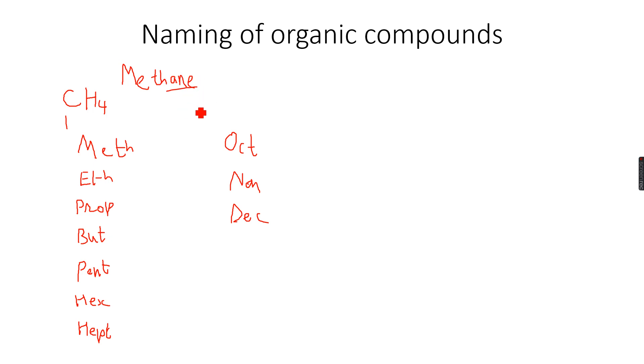How do we come to the second part of the name? The ane comes from the word alkane, because you know that methane is an alkane. That's why the ane comes from alkane. So if it's an alkane, then the name will end with ane. Therefore, if it's an alkane with one carbon atom, it will be methane.